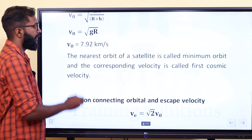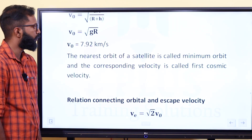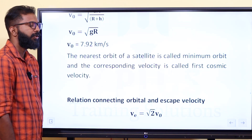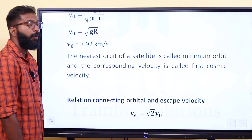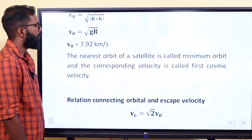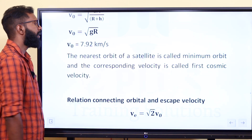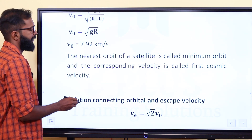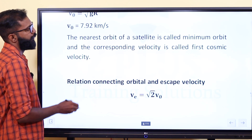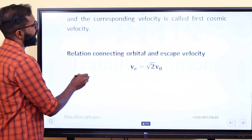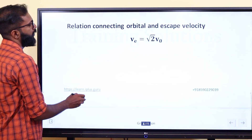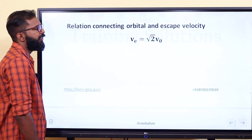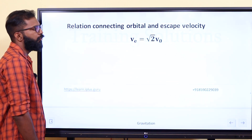The orbital velocity value is 7.92 km/s. Our escape velocity of Earth is 11.2 km/s, and orbital velocity is 7.29 km/s. Escape velocity and orbital velocity are related: VE = √2 · V₀.